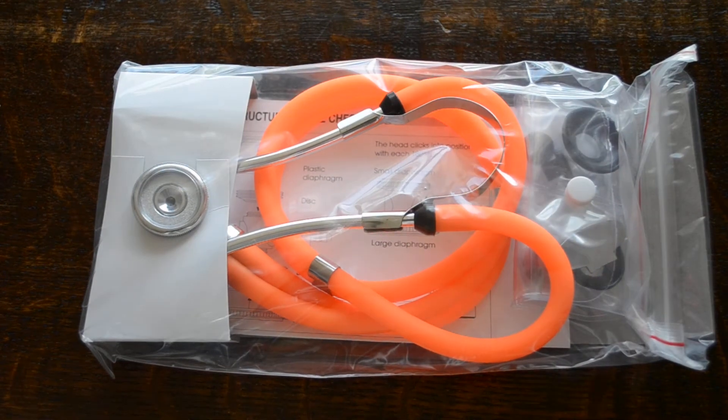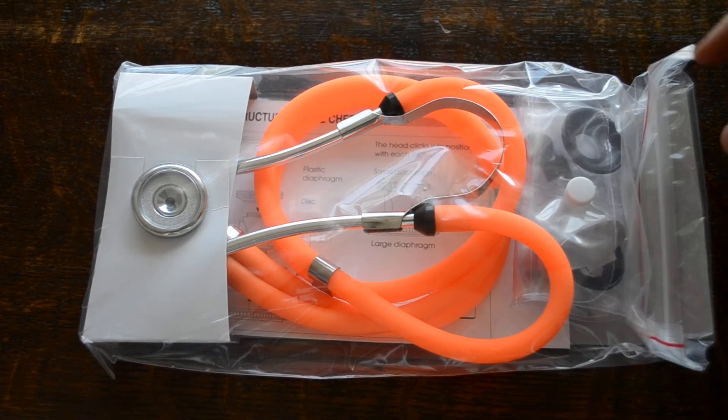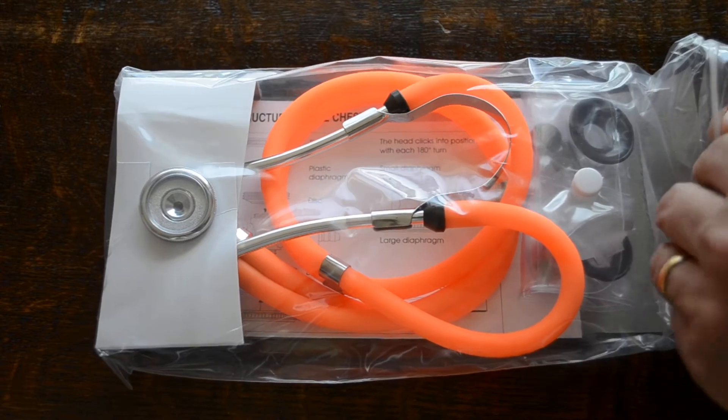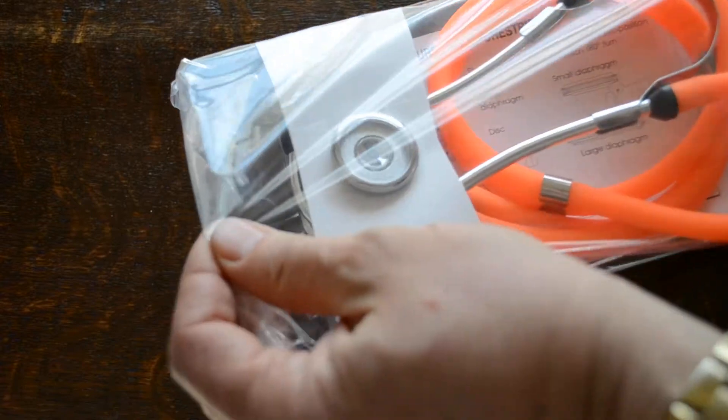Anybody wanting something that's going to stand out from the crowd, here you've got this really day-glow, almost translucent orange tubing on this Sprague which really is going to make it difficult for anybody to take from you without being noticed.